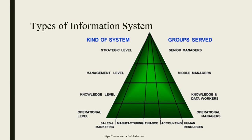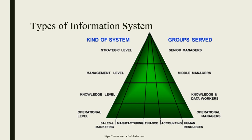These are the types of information systems at different strategic levels, groups, and kinds of systems. At the base, you have sales and marketing, manufacturing, finance, accounting, and human resources — this is known as the operational level, and the groups it serves are operational managers. The next level is the knowledge level, serving knowledge and data workers. Above that is the management level, where middle managers work. At the top is the strategic level, where senior managers take all strategic and managerial decisions for the pyramid of the information system to function perfectly.